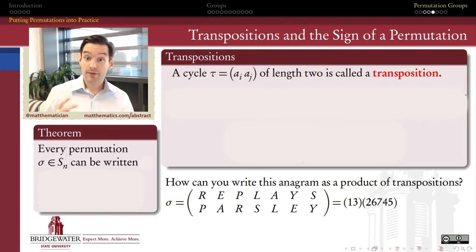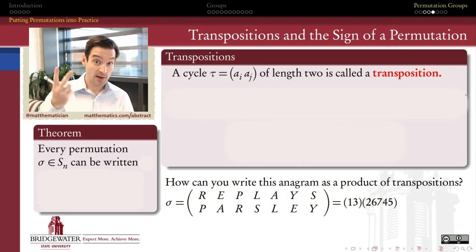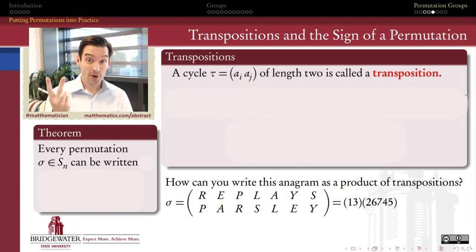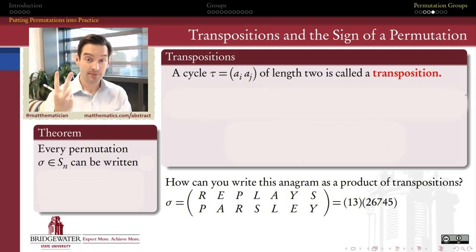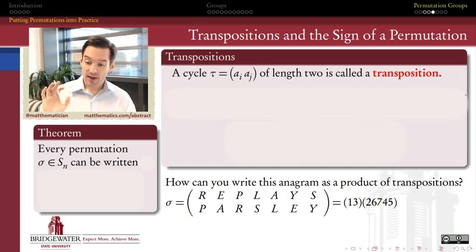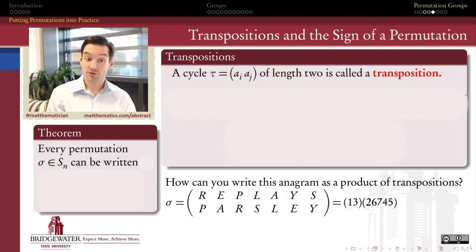A cycle of length two — just the result of taking two objects in my set and trading places — is called a transposition. One of the nice things about transpositions is that they're always their own inverses: if I trade places in two positions and then trade those places again, I get exactly back to where I started. So transpositions are super friendly — they're their own inverses. And what we're about to find out is that every permutation can be written as a product of transpositions.